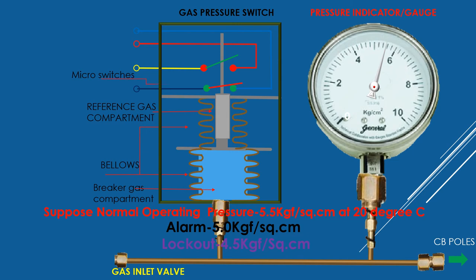There is a pressure switch which makes and breaks contact at particular pressure values when the gas inside the poles reaches below certain values — at 5.0 kgf per centimeter square and 4.5 kgf per centimeter square — by striking the tappet head. These contacts are connected electrically with alarm circuits and contactors situated outside to produce an alarm and to disconnect circuits as a protective measure. In the event of lockout, the circuit breaker should not be either closed or opened, so contactor 63GL actuates to disconnect the closing circuit as well as the tripping circuit.